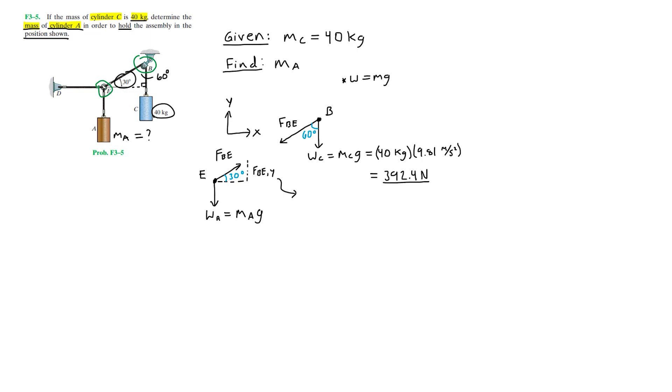Since the only force that's acting at point B is the weight of cylinder C, this tells us that the force that's being transmitted through wire BE has to be equal to that weight, which is 392.4 newtons. Now that we know the magnitude of force BE, we can find the Y component.